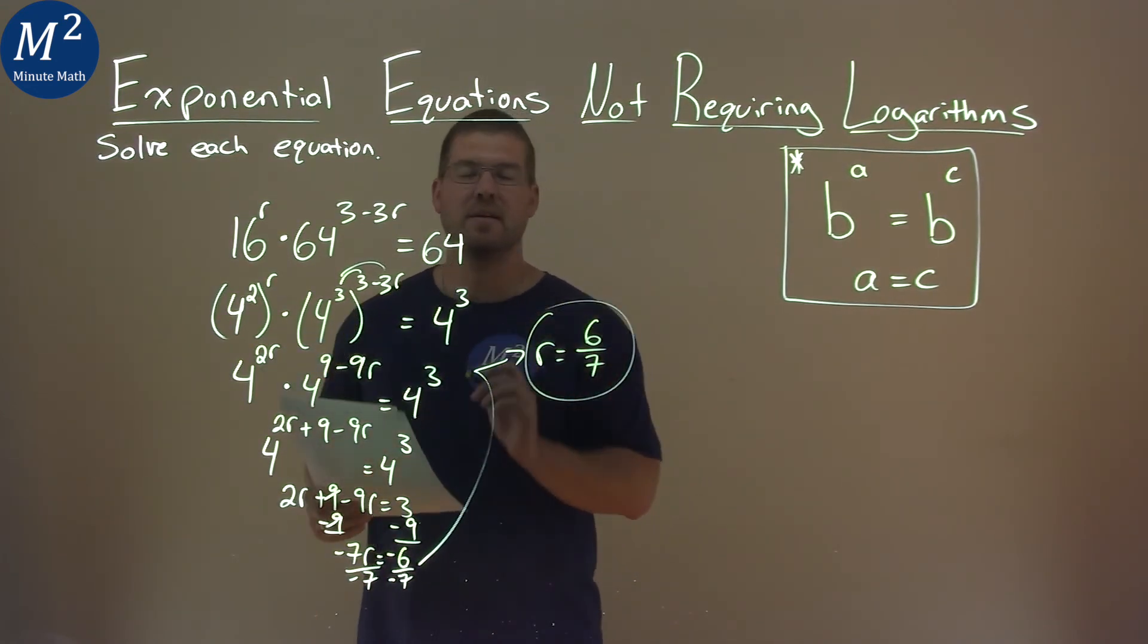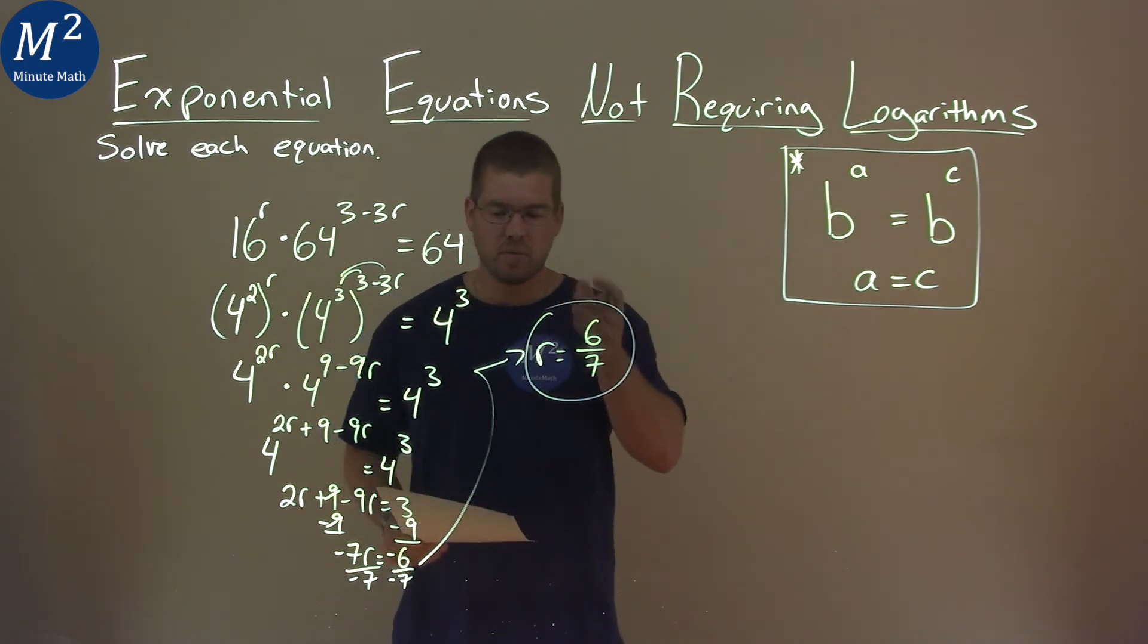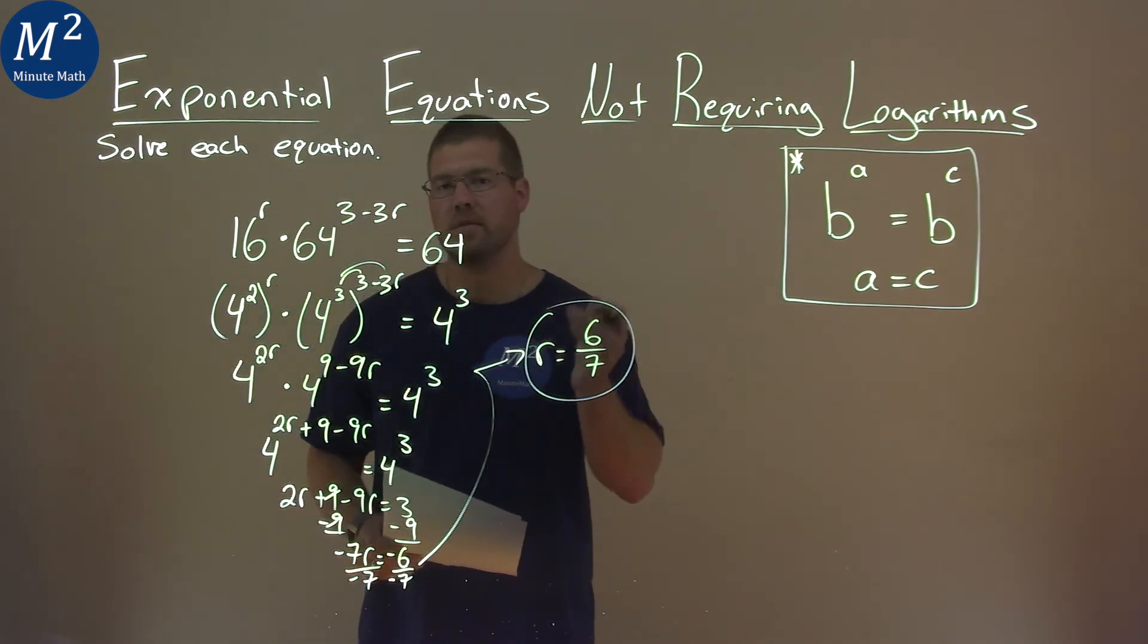And that's it. It doesn't simplify anymore. And so our final answer here is r equals 6 over 7.